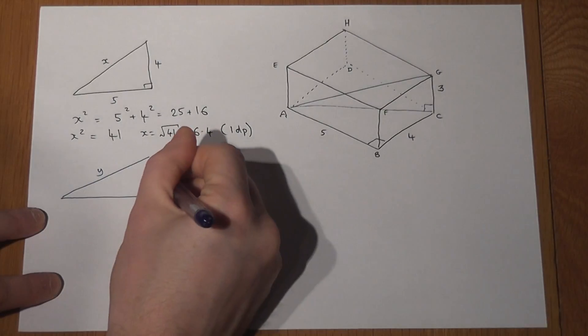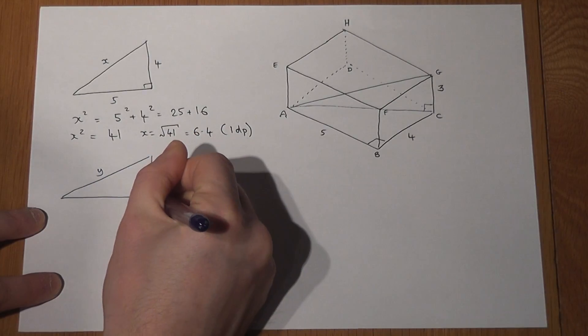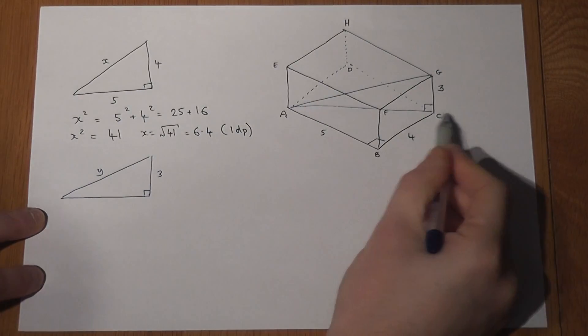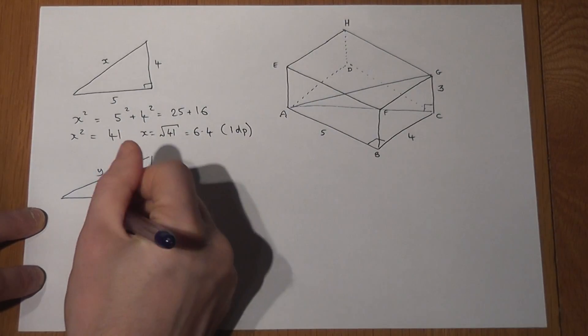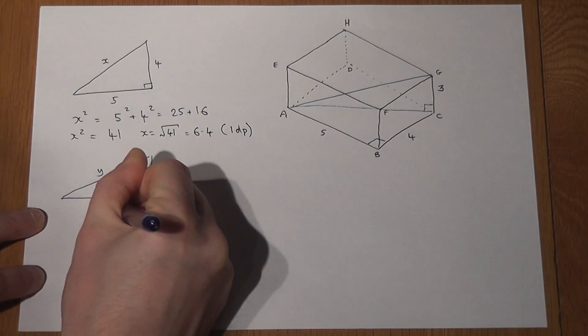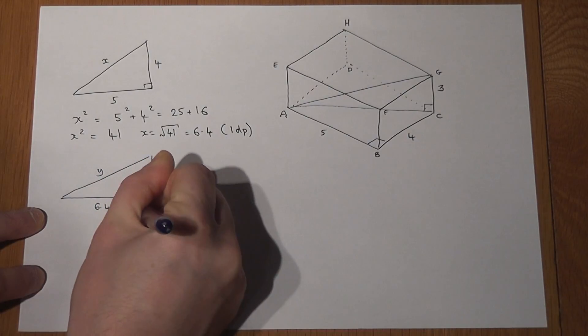Now we know the height is 3. We also now know the length across here. This was the answer from before, which was 6.4 to one decimal place.